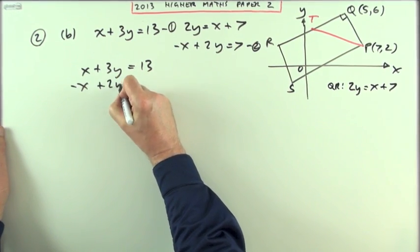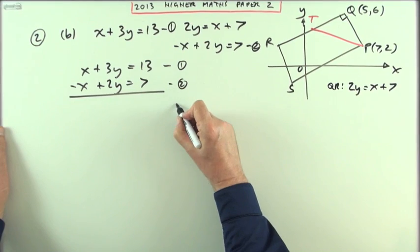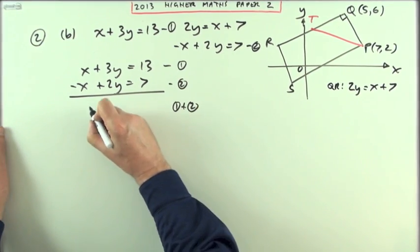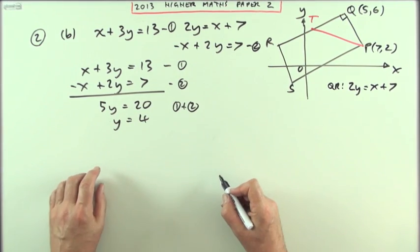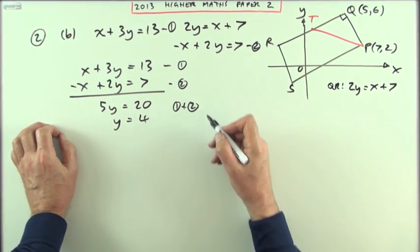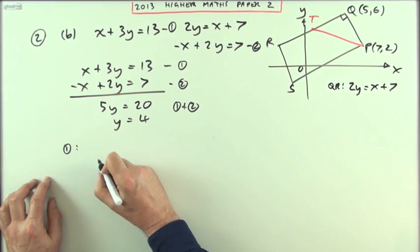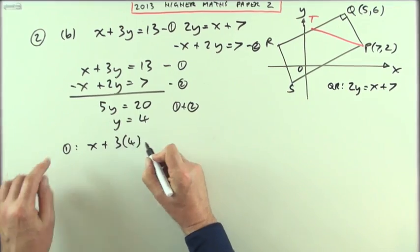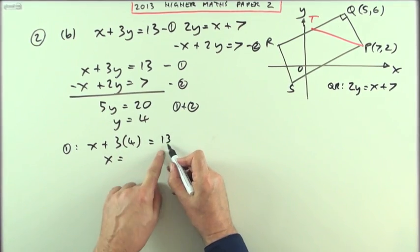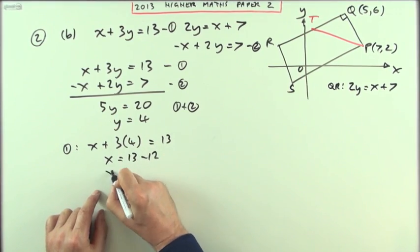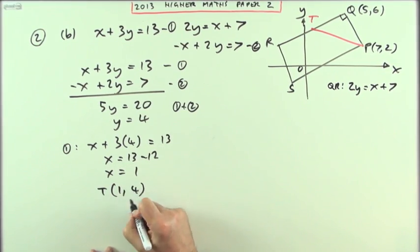So if I've got x plus 3y equals 13 and negative x plus 2y equals 7, then adding them together - where that was one and that was two - if I do one plus two, I'm going to have 5y equals 20, so y equals 4. And then popping that back into either one of them - I'll pop it back into this first one. Using number one, I've got x plus 3 lots of 4 should equal 13, so x is going to be 13 minus that 12, so x is going to be 1. So I've got T is the point (1, 4).